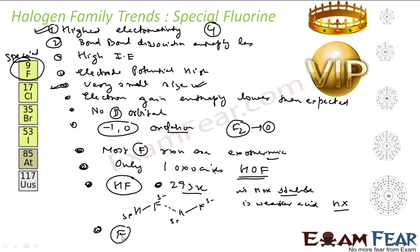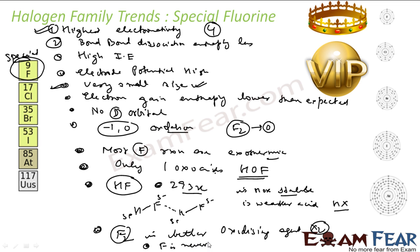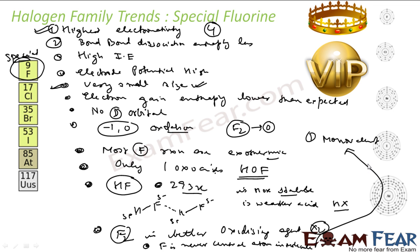Fluorine is a better oxidizing agent as compared to other halogens. One more special property is that Fluorine is never the central atom in any molecule. Why? Because it is monovalent — at most it can have only one bond. Since it is monovalent and can form only one bond, Fluorine is never a central atom in any molecule.